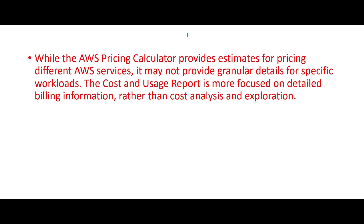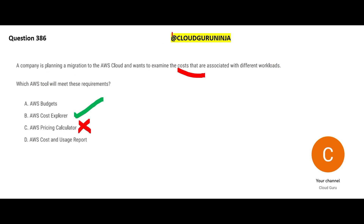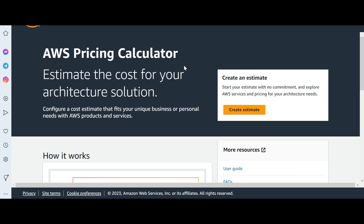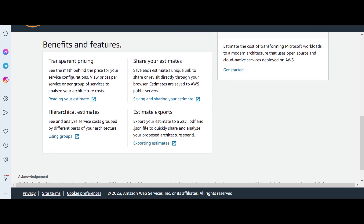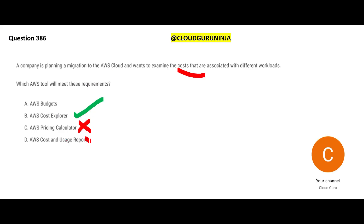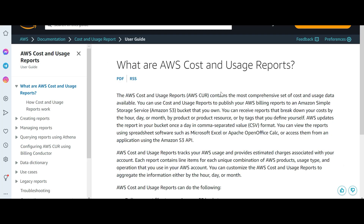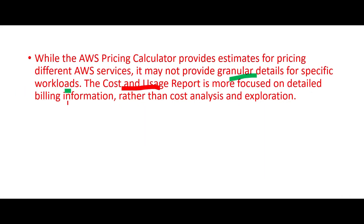A lot of people ask: what about the Pricing Calculator? The problem with Pricing Calculator is it may not give you granular details for specific workloads, which are required to make a well-informed decision. On the AWS Pricing Calculator website, you can estimate the cost for your solution architecture using reference guides, and export estimates in CSV, PDF, or JSON format. The Cost and Usage Report, on the other hand, is useful not before you migrate but after - it helps you look at AWS billing reports to understand how much your S3 or Redshift investment cost. It is more focused on billing information than cost analysis.